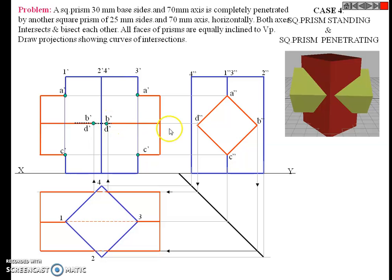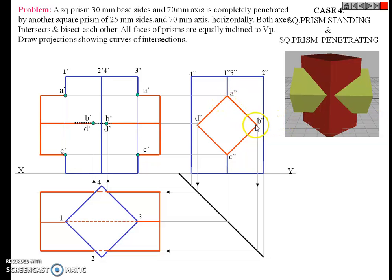B dash is obtained by taking a horizontal projection from the side view. Now we have A dash, B dash, and C dash. If the observer is in front of this view, we are able to see only A dash, B dash, C dash. The backside portion A dash, D dash, C dash is invisible.